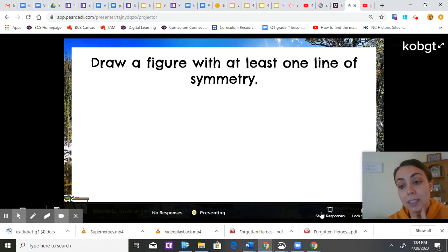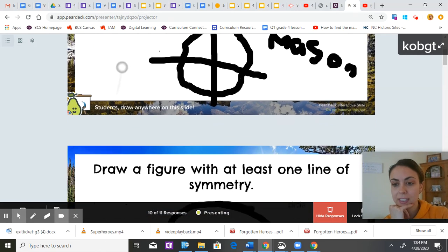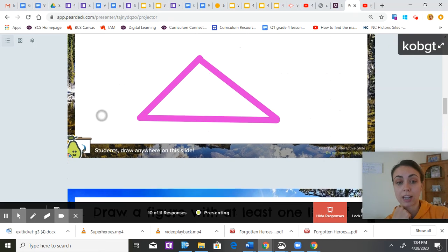Draw a figure with at least one line of symmetry. So we'll look at what the class drew. That circle has infinite, circle, circle, that triangle.